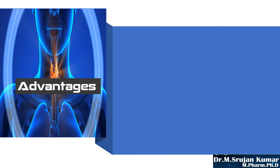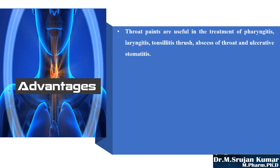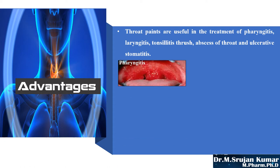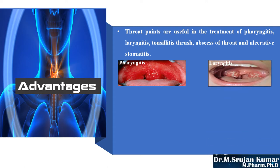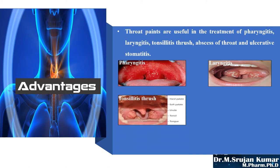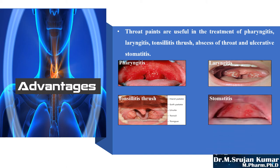Next, moving on to the advantages of throat paints. Throat paints are useful in the treatment of pharyngitis, laryngitis, tonsillitis thrush, abscess of throat, and ulcerative stomatitis. Here is a tip: any terminology that ends with '-itis' indicates inflammation. So pharyngitis means inflammation of the pharynx, laryngitis means inflammation of the larynx, and tonsillitis means inflammation of the tonsils. Stomatitis means sore mouth — that is, ulcerations in the mouth — which are inflamed areas.